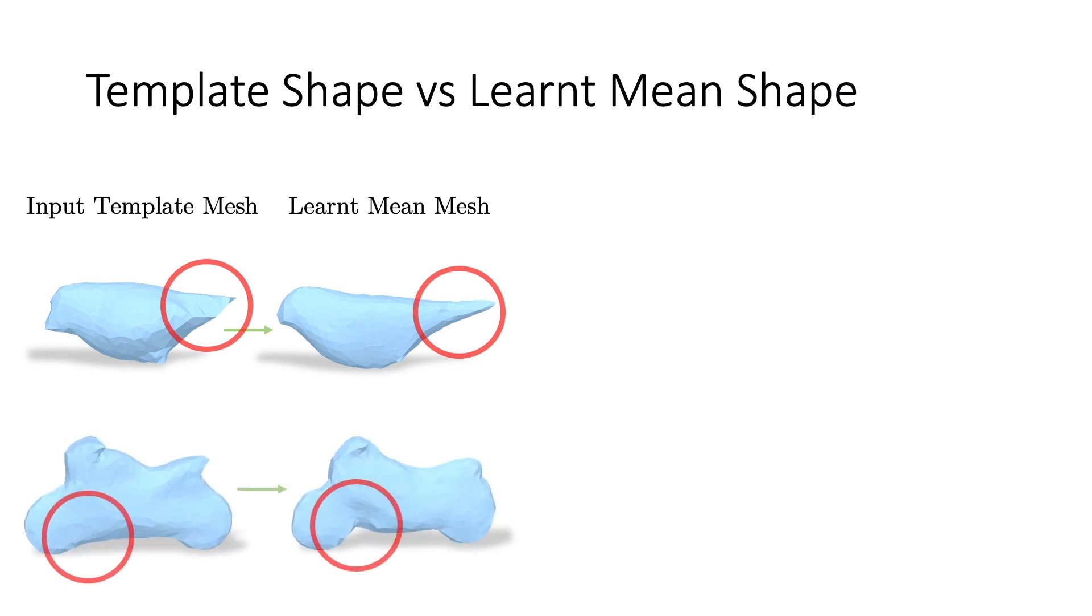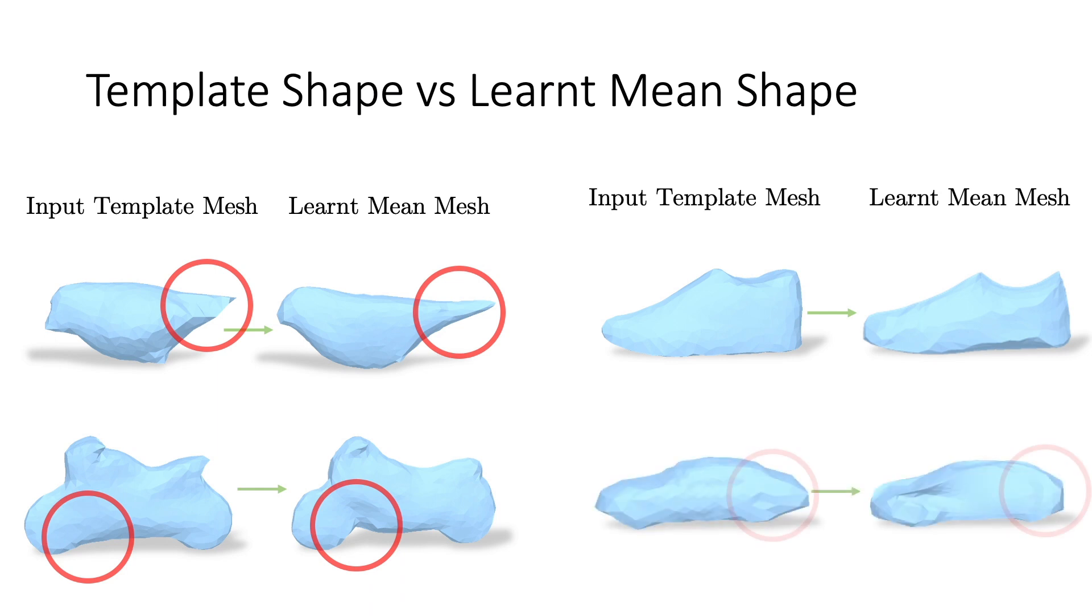The motorcycle's front tire becomes more prominent. The shoe becomes slightly sleeker and longer. The back of the car reduces in size.